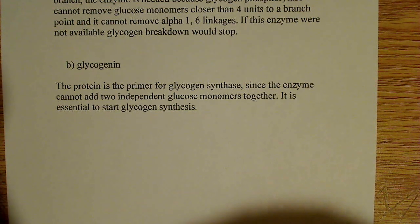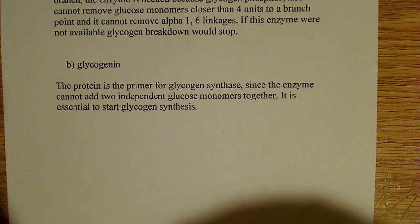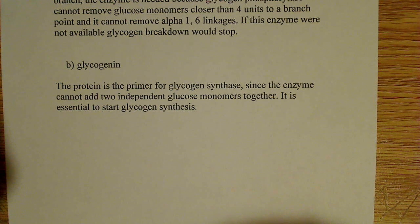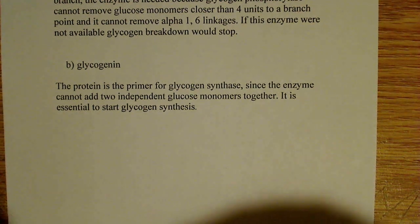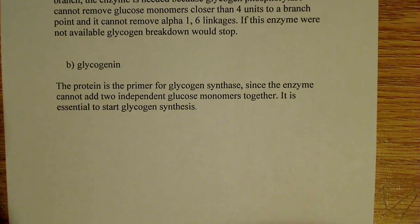You could not put glycogen synthase in a vial, add glucose monomers, and have it synthesize a full glycogen molecule. You have to have this primer. This primer is a protein called glycogenin, and essentially what it does is start glycogen synthesis. It's an important component, and there are a couple more interesting facts about it.